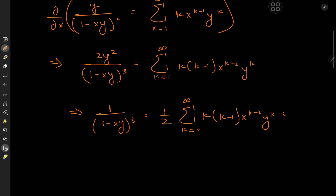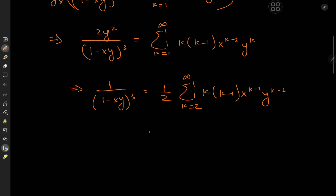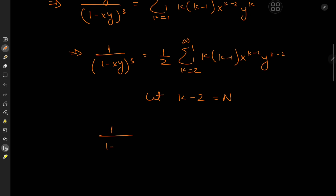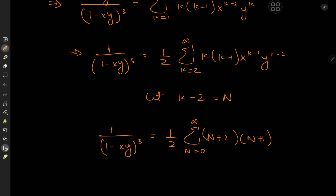Since it would be nicer to start the sum at k equal to 0, I'll produce a shift in the index variable — let k minus 2 equal n, so the sum starts at 0. We then have 1 over (1 minus xy) cubed equals one half the sum over n from 0 to infinity of (n plus 2) times (n plus 1) times x to the n times y to the n. That's our required series expansion.